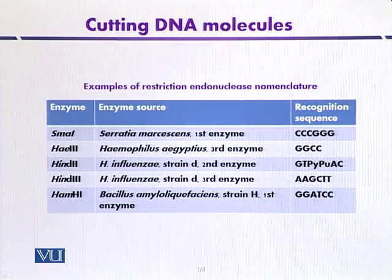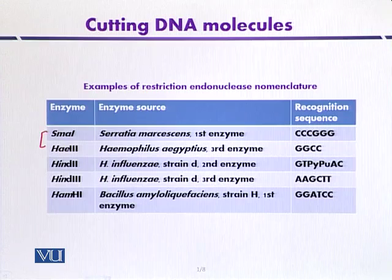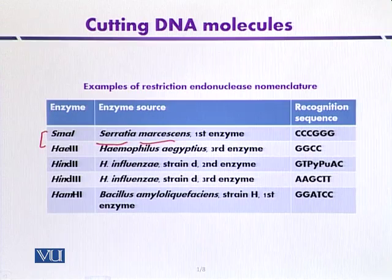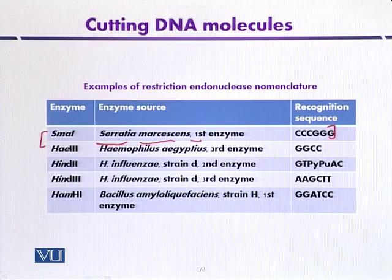Taking the first example: SMA1 — this enzyme was isolated from Serratia marcescens. 'S' is from the genus name and 'MA' from the specific epithet. It was the first enzyme isolated from that organism, so it was named SMA1. Its recognition sequence is a six base pair sequence: CCCGGG.